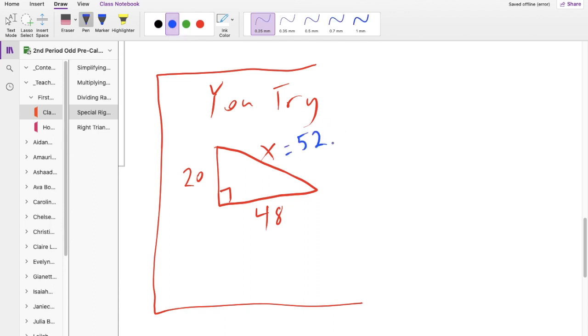So on this problem you should have gotten your hypotenuse to be 52. This is a 5-12-13 triangle.